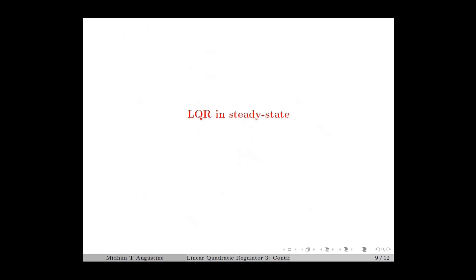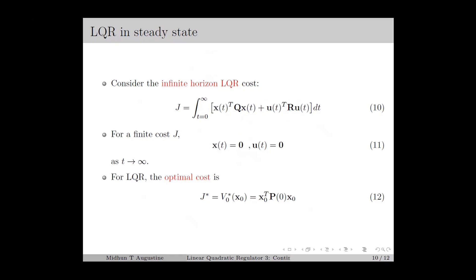Next, we move on to the steady-state analysis of LQR. We are considering the infinite horizon LQR cost as defined in equation number 10. For a finite cost J, we require the state x(t) and control input u(t) to equal 0 as t tends to infinity, which implies the system should be asymptotically stable under the LQR control law. We have seen that if the LTI system is controllable, we can drive x(t) to the origin. Therefore, in order to have a finite optimal cost, a sufficient condition is the controllability of the system, or at least the stabilizability of the system.